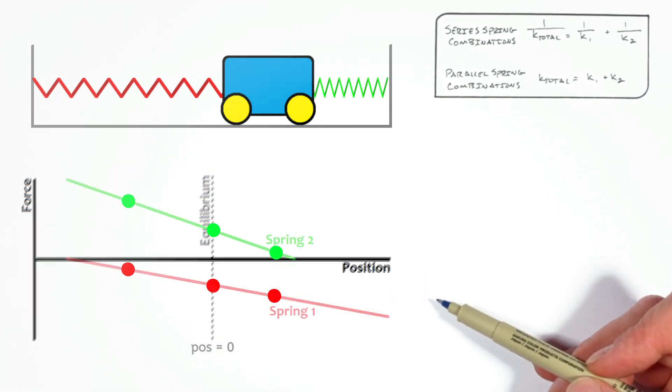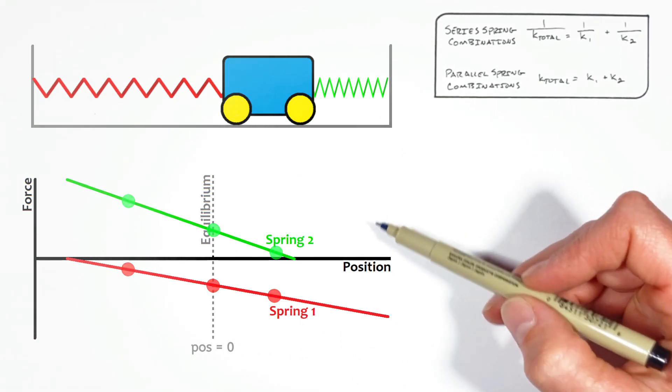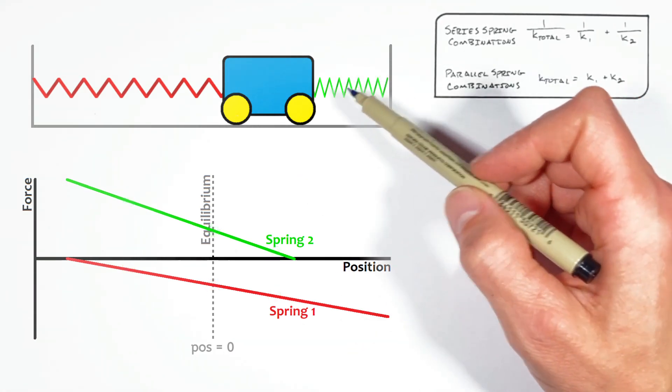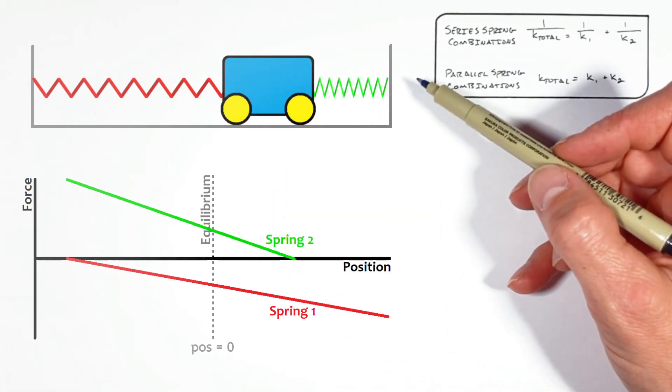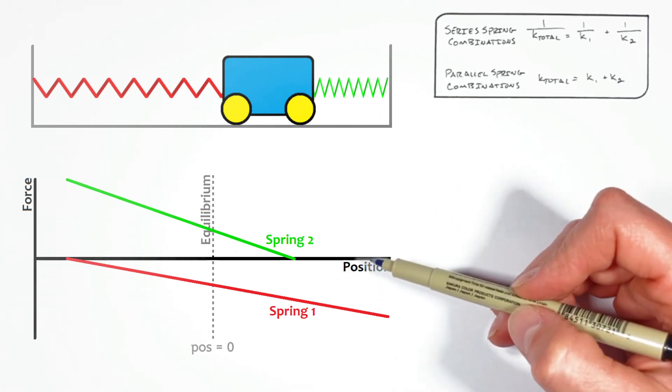And if you look at the trend that's formed here, we have two lines, one for the force produced by each spring. And realize, these two springs don't have to have the same spring constant. Meaning on our force versus position graph, these two lines don't have to have the same slope.